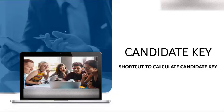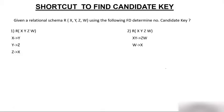Today the topic of discussion is candidate key, and we are going to understand the shortcut method to calculate the candidate key. Prior to this video we have seen how to calculate the candidate key, but that method was quite long, so now we'll understand the shortcut method to find the candidate key. There are two questions given with relational schemas and functional dependencies.